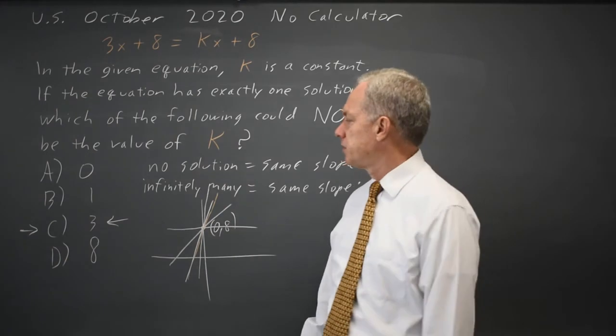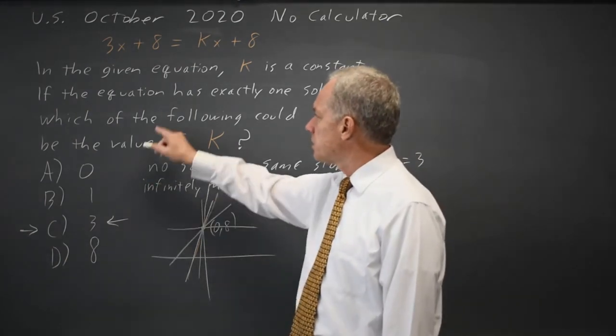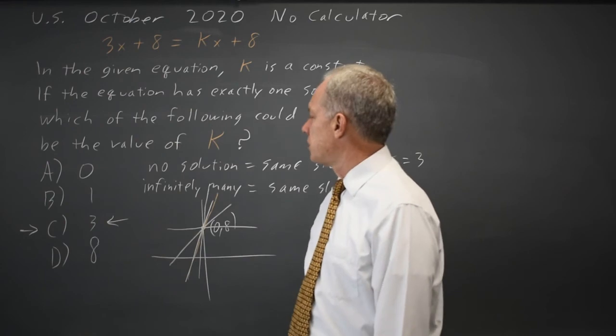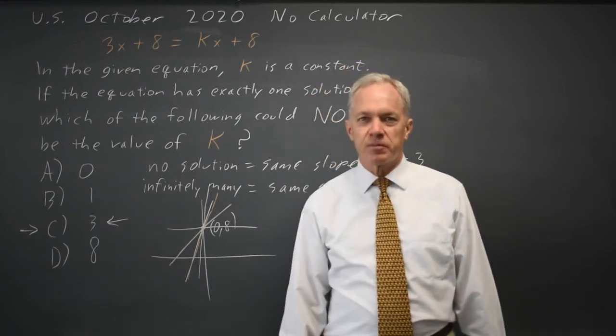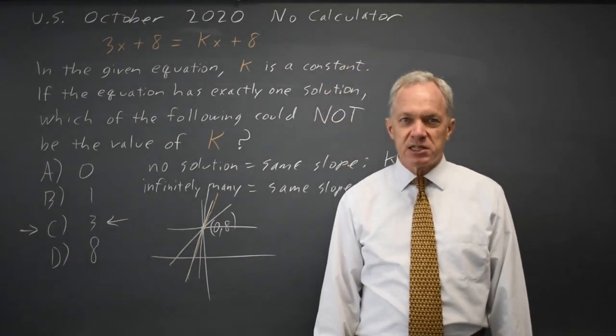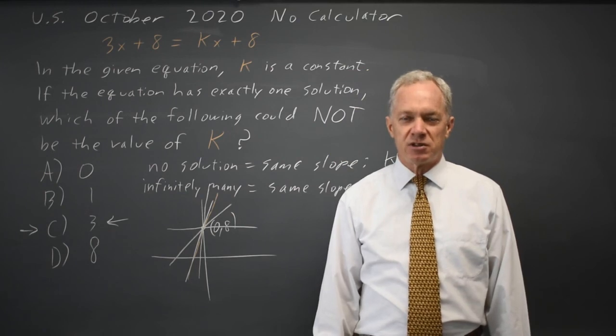But the fastest way to answer this and the way that matches their usual wording is to look for the same slope, k equals 3. Come back soon for my next SAT video. With math, there's always more.